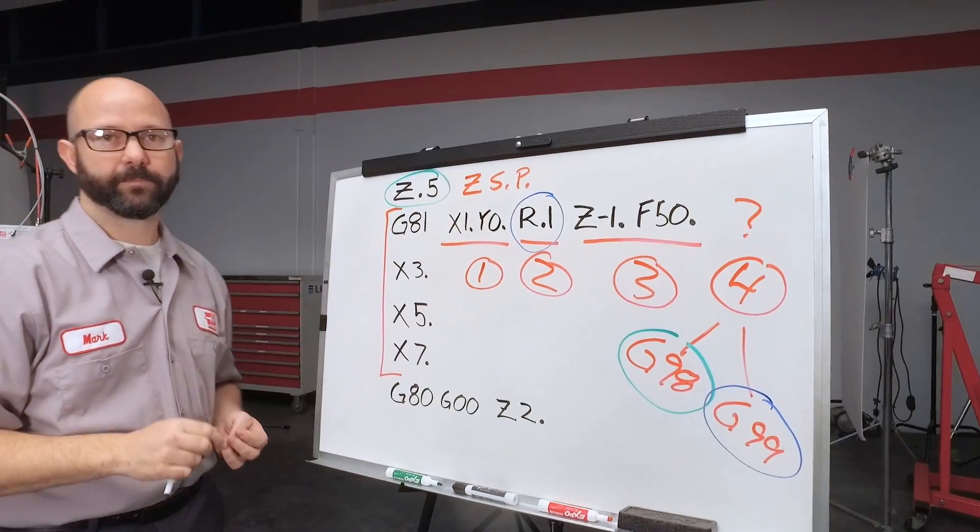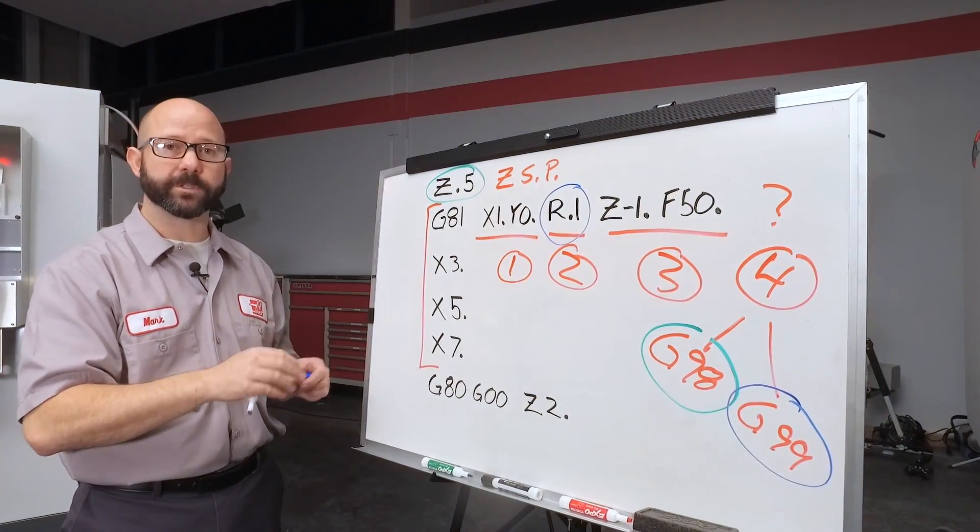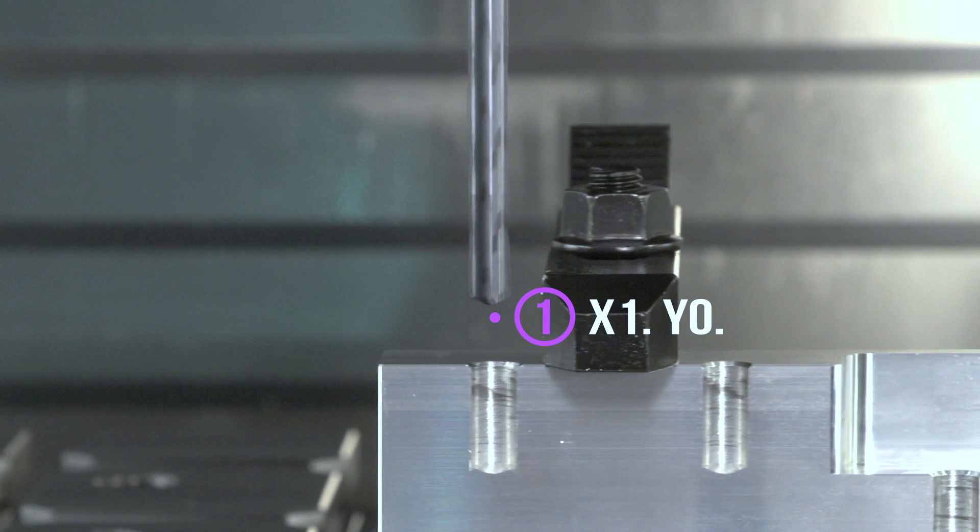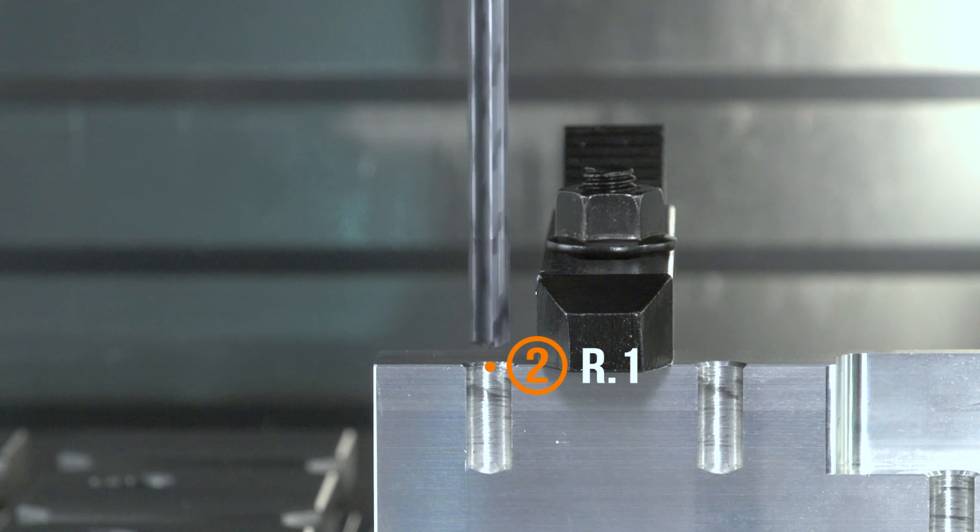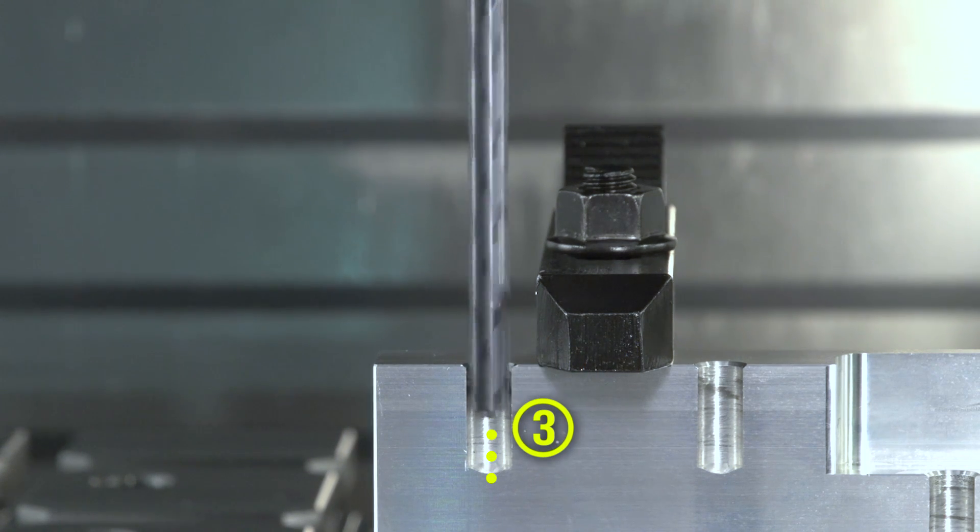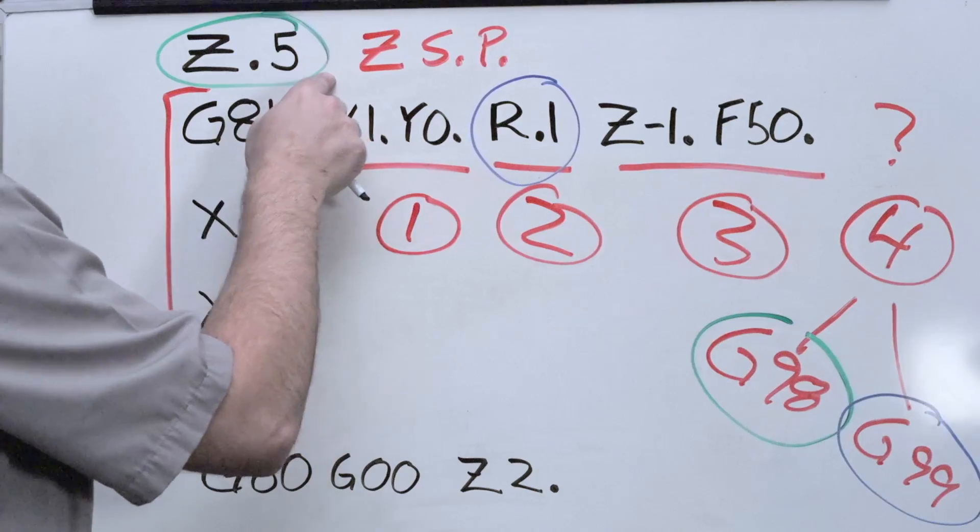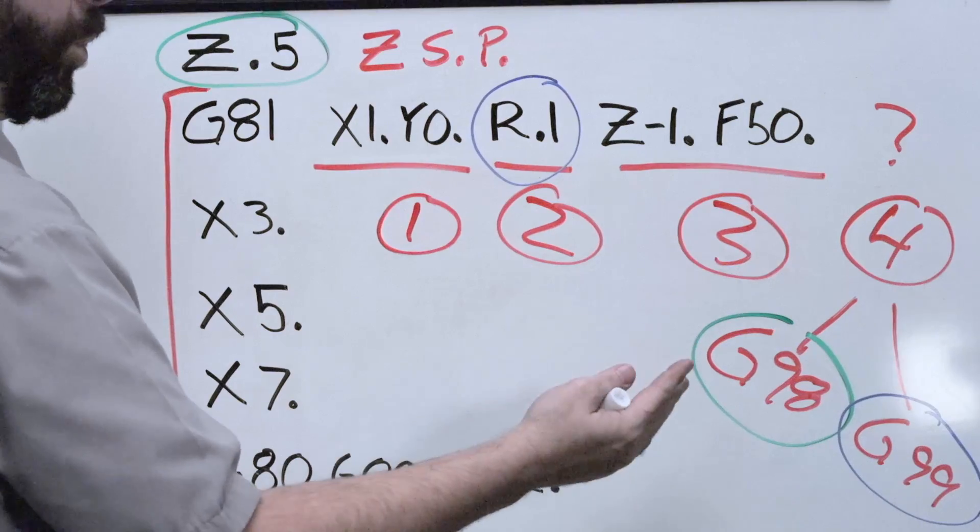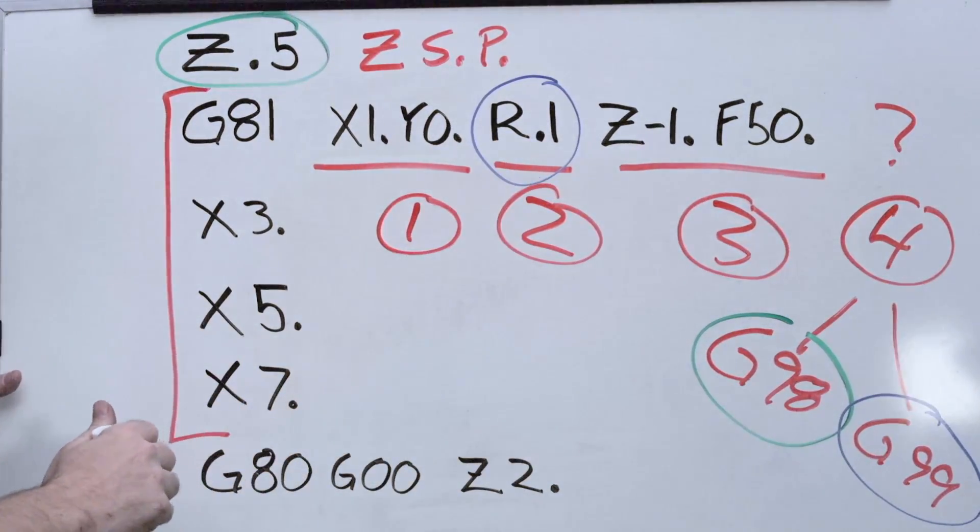To recap, the control is going to use the same order of operations for all these holes. One, two, three, four. First, it's going to position the XY. Second, it's going to rapid to the R plane. Third, it's going to feed to our Z depth. And fourth, it's going to either rapid back to our Z starting position if a G98 was commanded, or it's going to rapid back to our R plane if a G99 was commanded.